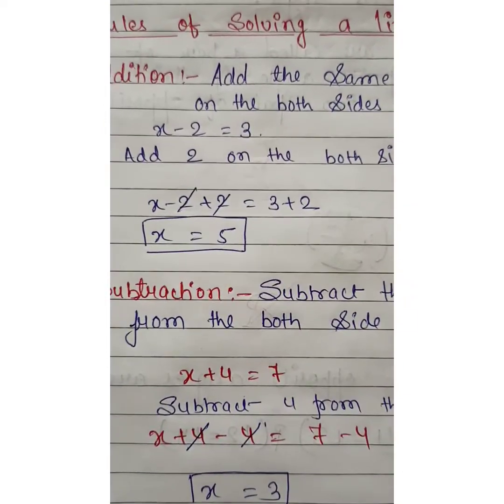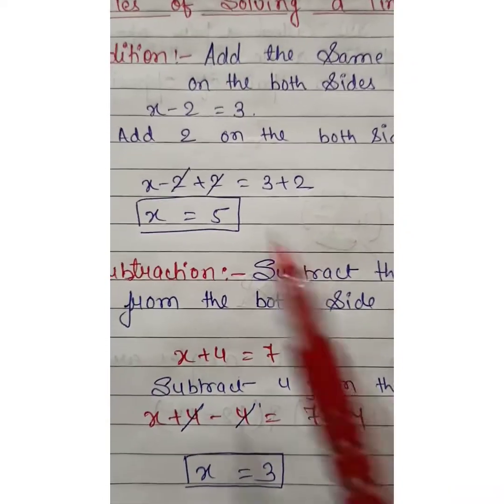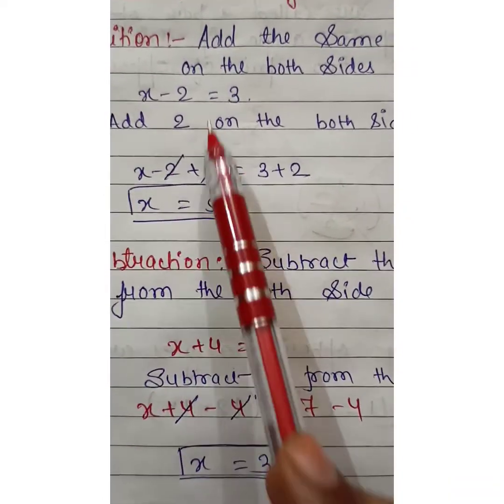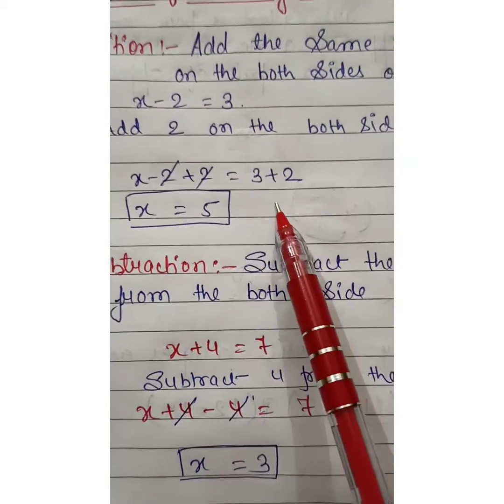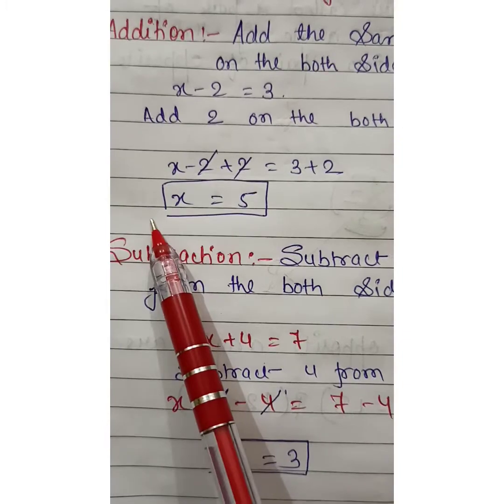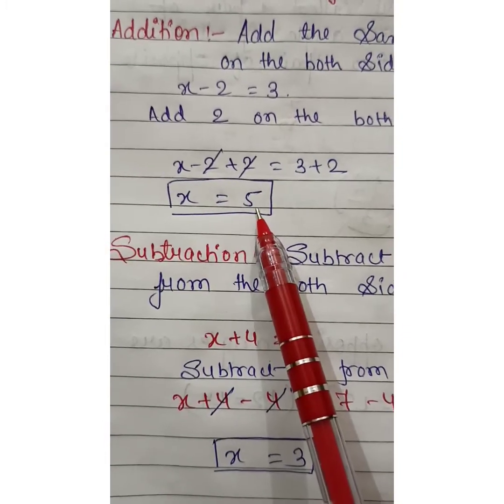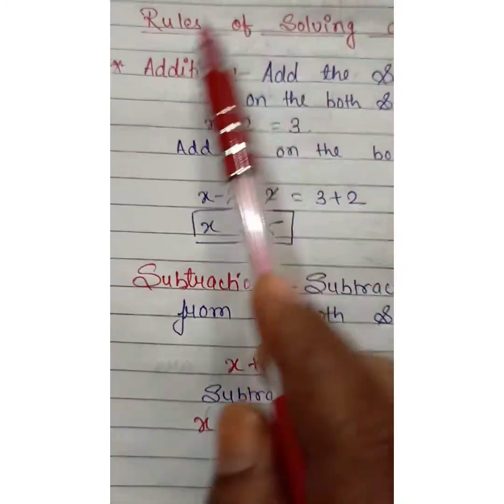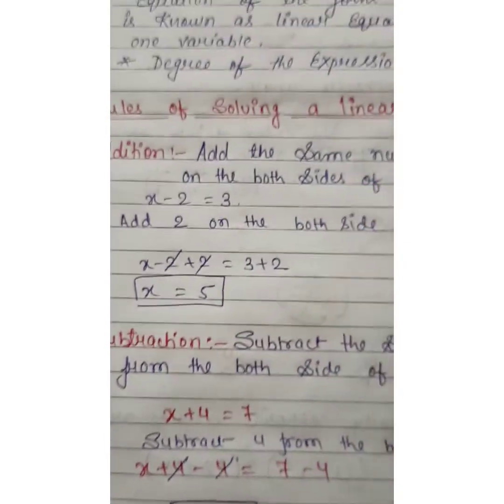See here x minus 2 plus 2, and on the other side 3 plus 2. The 2s cancel out, and the value of x we get is 5. In this way this property is applied in solving the linear equation.